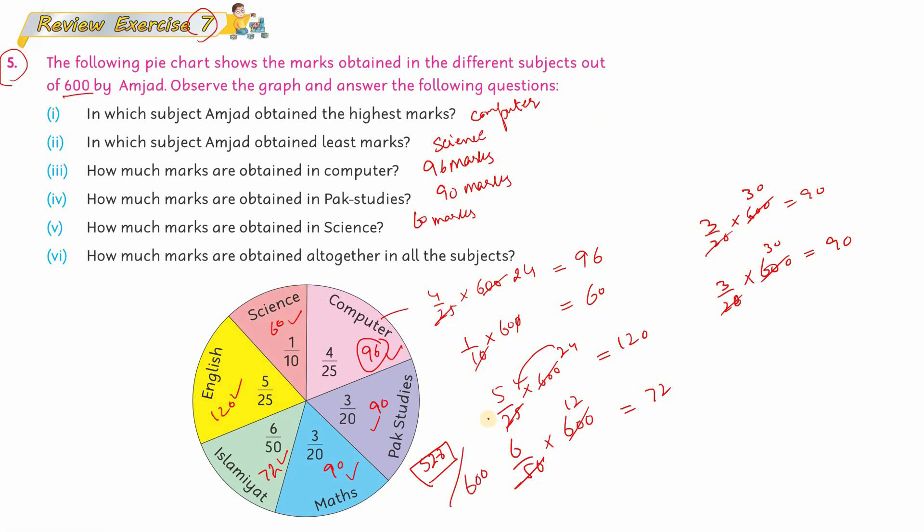This means Amjad has obtained 528 marks out of 600. So dear children, this was question number 5 of review exercise 7. That's all for today. Allah Hafiz.